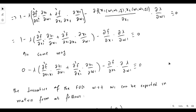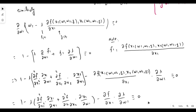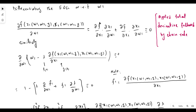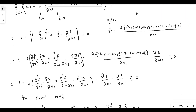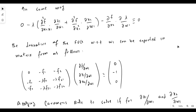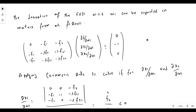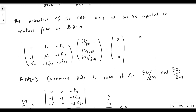Repeating the same process for the third identity with respect to w1, we get three equations. These three equations can be reported in matrix form — converting them into a system of three matrices.